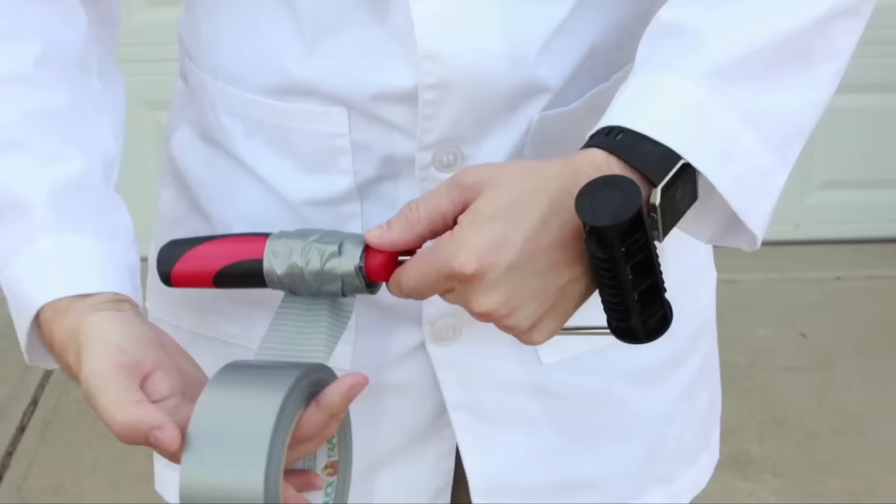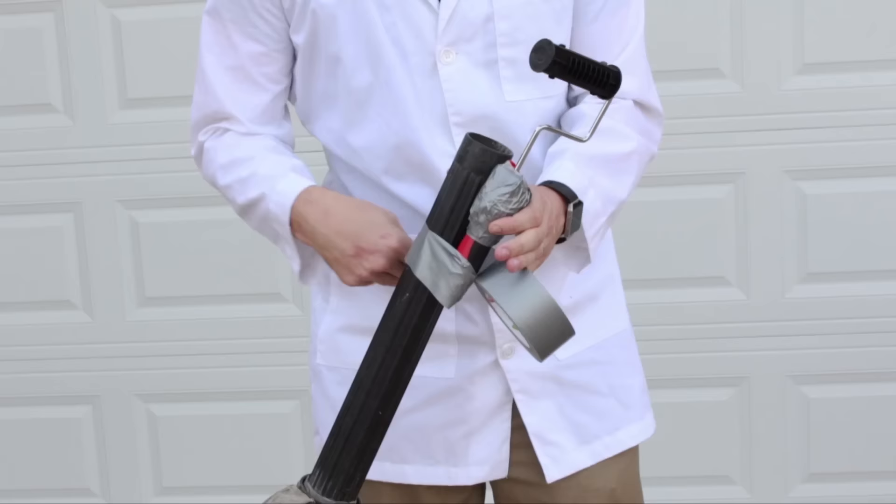After that, take a small paint roller and add several layers of duct tape toward the top of the handle to make a spacer. Now securely tape the paint roller to the end of the leaf blower.